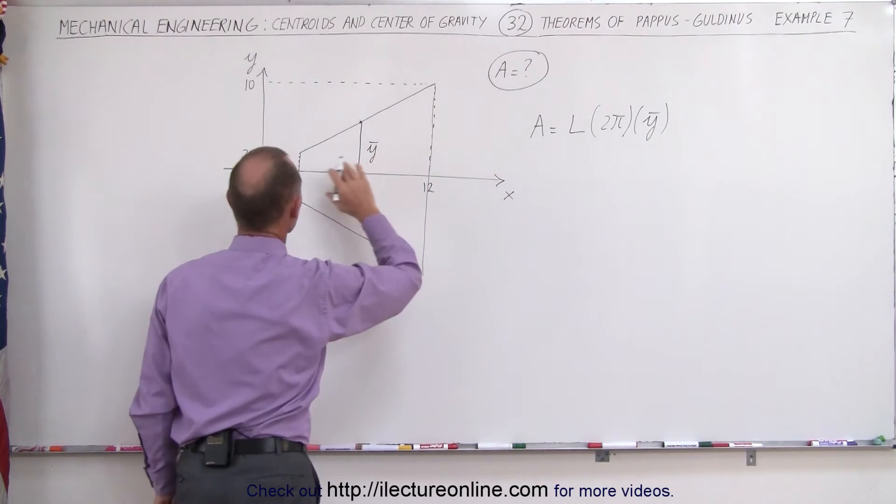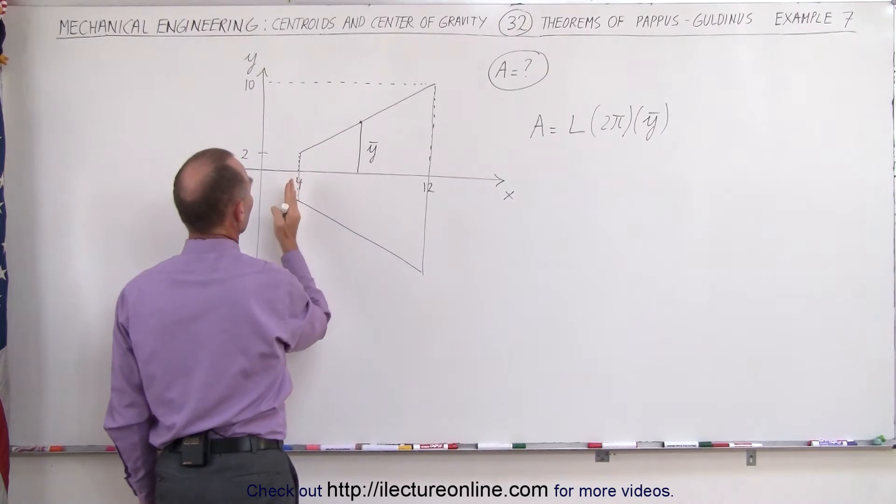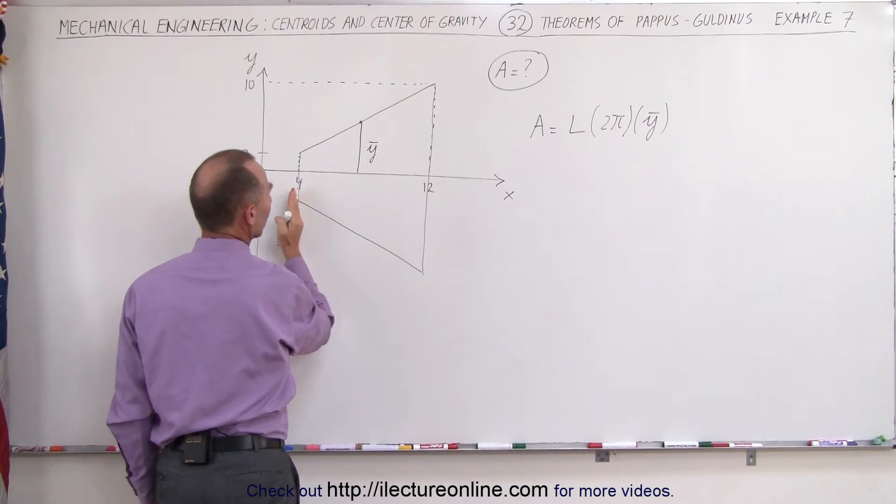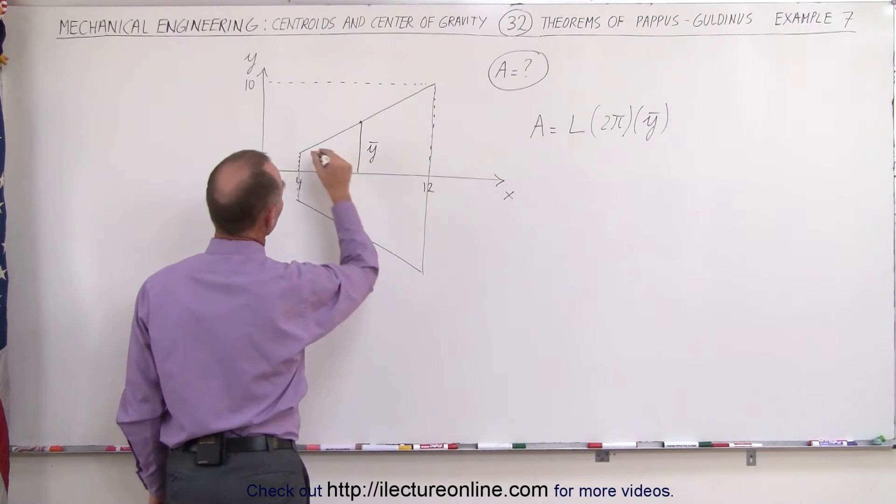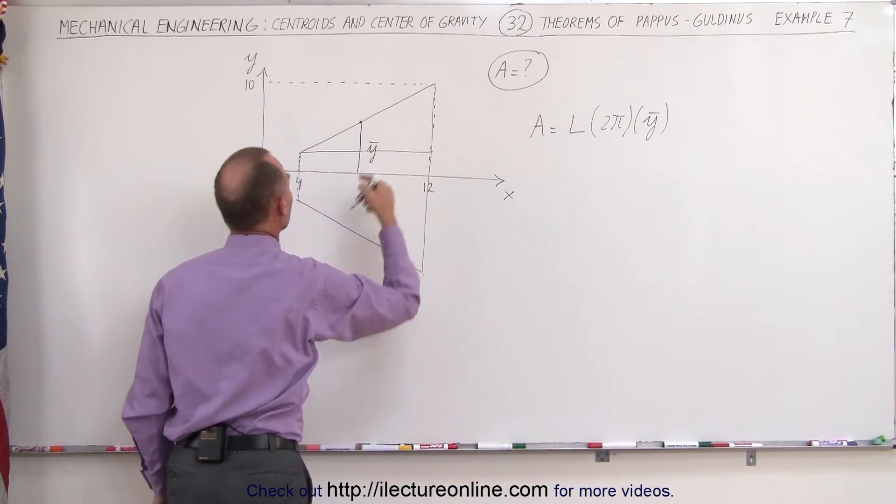To find the length we need to understand a little bit more about the shape of this. Notice that it starts from position 4 in the x-axis and position 12. If we draw a triangle right here, notice that this is the hypotenuse of that triangle.